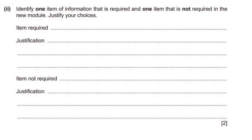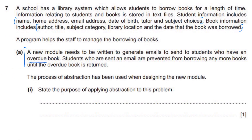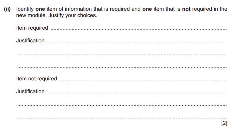Now identify one item of information that is required and one item that is not required in the new module, and justify your choices. What information does this module need? One piece of information we need is probably a student email address, because we need to be able to send them an email. A piece of information we don't need is like a student home address — why do we need that? We don't need a home address because we're not doing anything involving their home, like sending them a letter. We need the email address to be able to notify them they have an overdue book. So item required would be email address.